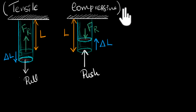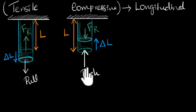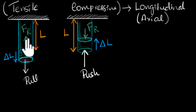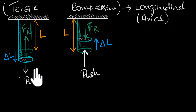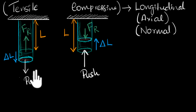Together, tensile and compressive stress and strain we often call longitudinal stress or strain. The word longitudinal comes from the fact that we are talking about stresses and strains happening along the axis of the rod — so it's also called axial stress and axial strain. Another thing to notice is that the restoring force in both cases is perpendicular to the area of cross-section. Therefore, longitudinal stress is also sometimes called normal stress, because 'normal' stands for perpendicular.